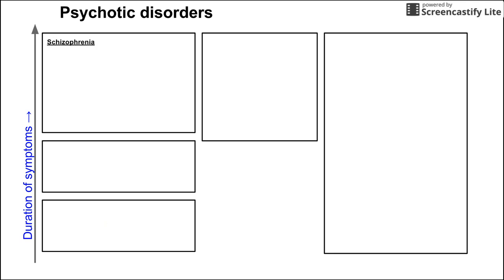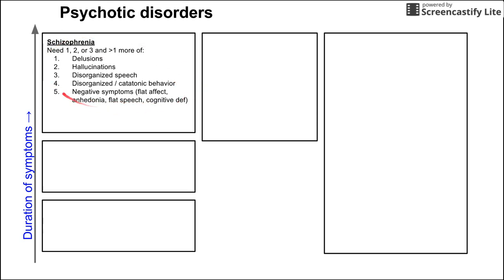Let's begin with schizophrenia. Schizophrenia is a psychotic disorder requiring at least two of five symptoms, and at least one must be from the first three: delusions, hallucinations, or disorganized speech. The other options are disorganized or catatonic behavior, and negative symptoms, which include flat affect, anhedonia, flat speech (poverty of speech), and cognitive deficits. These symptoms must be present for at least one month.